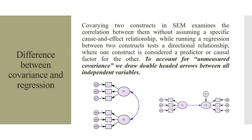What is the difference between covariance and regression? Covarying two constructs in SEM examines the correlation between them without assuming a specific cause and effect relationship, while running a regression between two constructs tests a directional relationship where one construct is considered a predictor or causal for the other. To account for unmeasured covariance, we draw the double-headed arrows between all independent variables.